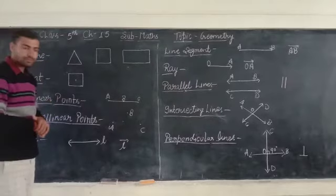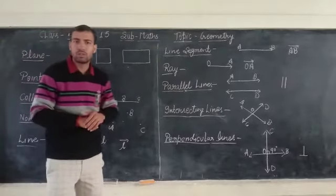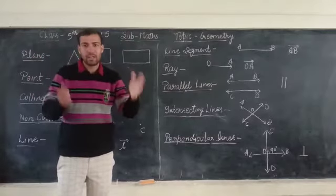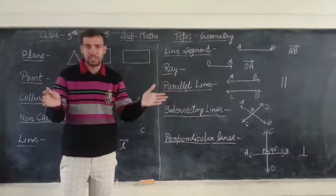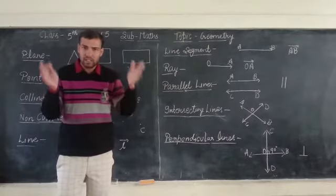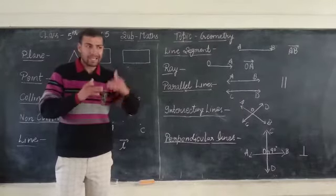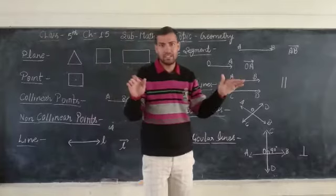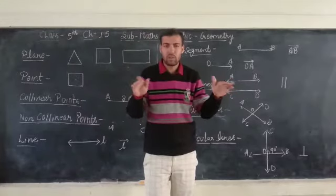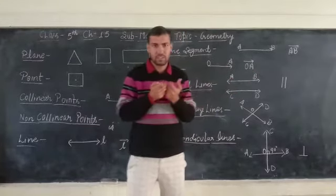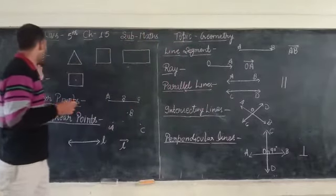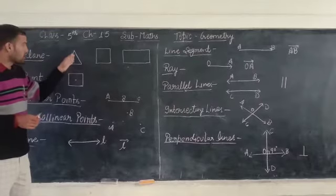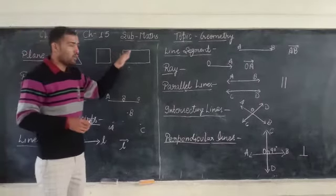First: Plane. What is a plane? A plane is a flat surface. It can be extended endlessly. These are flat surfaces — that's why it is called a plane. A plane can be in the form of a triangle, a square, or a rectangle.